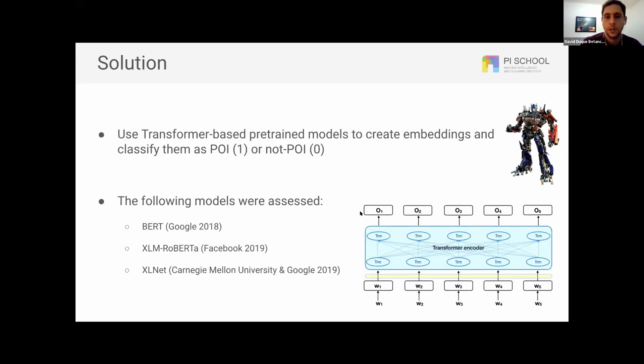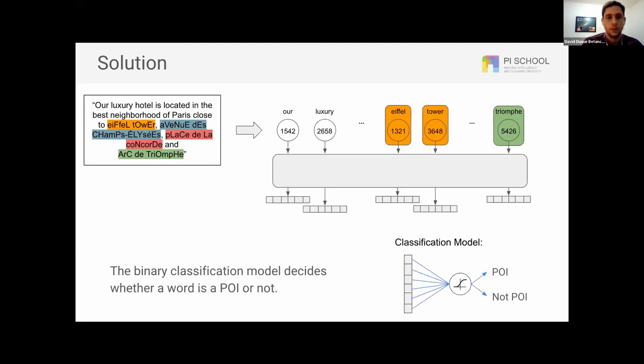So we have assessed three main models, main pre-trained models, which are BERT from Google, XLM Roberta from Facebook, and XLNet from Carnegie Mellon University and Google.